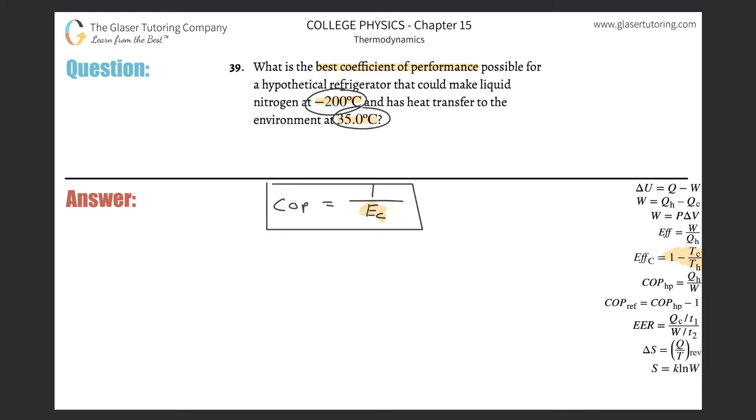So I can just do a substitution. The coefficient of performance is going to be equal to one divided by one minus temperature of the cold over temperature of the hot reservoir. And literally it's just a nice plug in now. So it's one divided by one minus temperature of the cold, which is going to be negative 200 - you've got to add 273 to that.